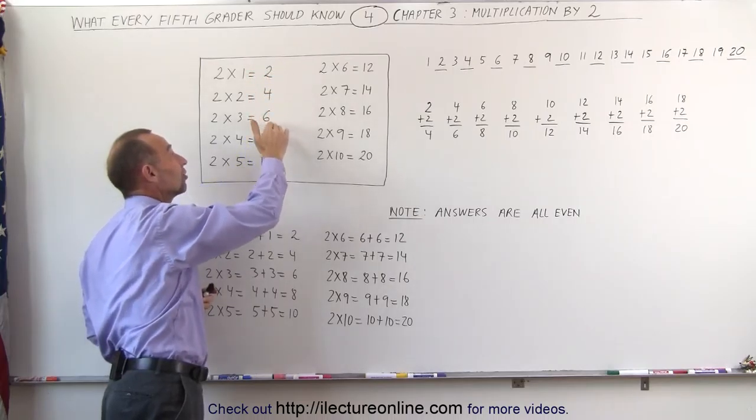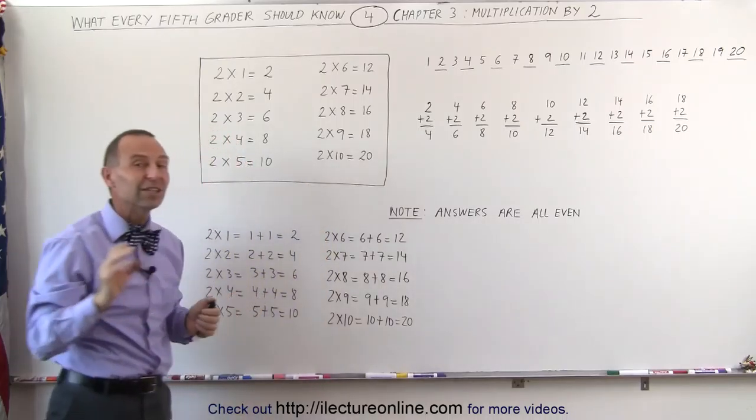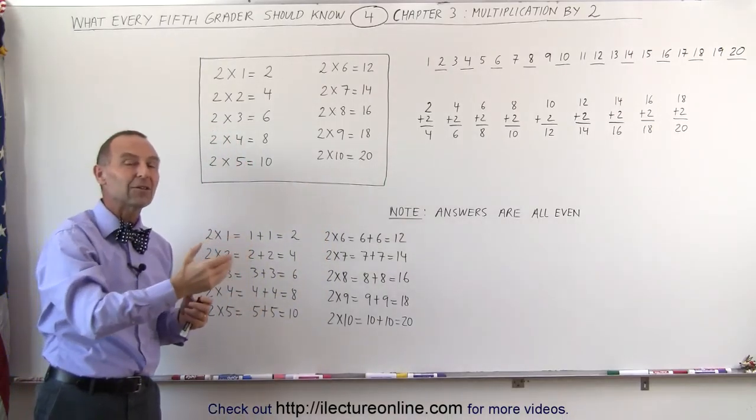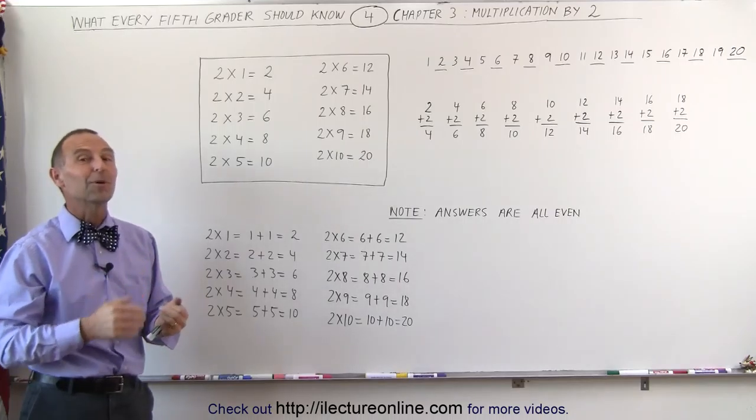The answers are 2, 4, 6, 8, 10, 12, 14, 16, 18, 20. If you see that pattern, and with all the other multiplications, it will be that much easier to do multiplication. In this case, this is multiplication by 2.